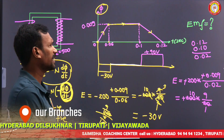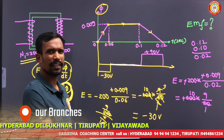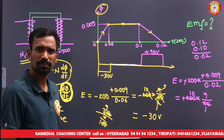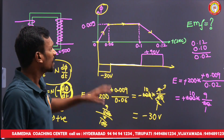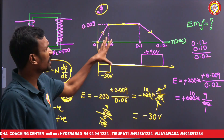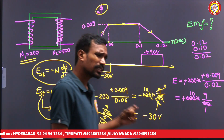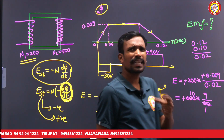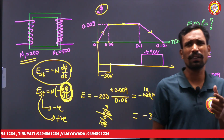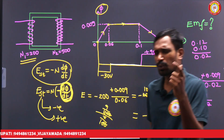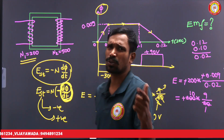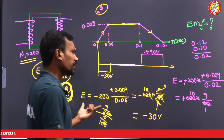If it is the secondary, take 500 turns to get the secondary value. These are the types of numerical-based questions they will ask. If they want a theory question, they will approach it differently.